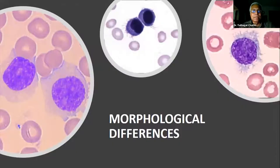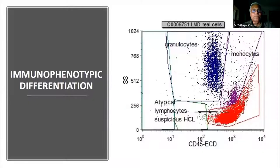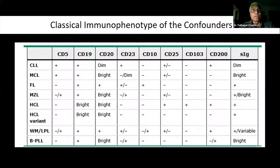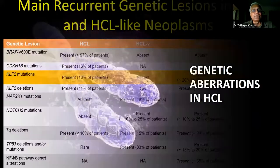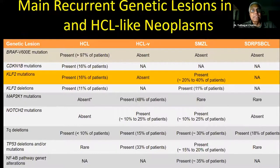To summarize: morphological differences between hairy cell leukemia, hairy cell variant, SDRPL, plasma cell leukemia, and SMZL are significant. Immunophenotypic differentiation is most important — using CD5, CD19, CD20, CD23, CD10, CD25, CD103, CD200, and surface immunoglobulin, you can differentiate a host of CLPDs. The genetic aberrations are also critical: KLF2 mutations are seen in 20-40% of SMZL cases; BRAF V600E mutations in classical hairy cell leukemia; and MAP2K/NOTCH2 mutations in hairy cell variant.